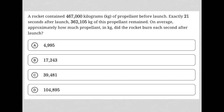This question says a rocket contained 467,000 kilograms of propellant before launch. Exactly 21 seconds after launch — so T equals 21 — 362,105 kilograms of this propellant remained. That means it lost whatever the difference is between 467,000 and 362,105. The question asks: on average, approximately how much propellant in kilograms did the rocket burn after each second after launch?